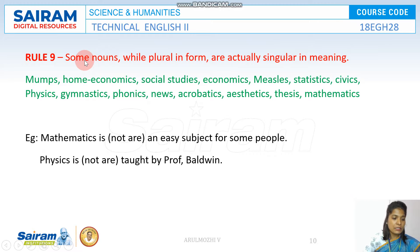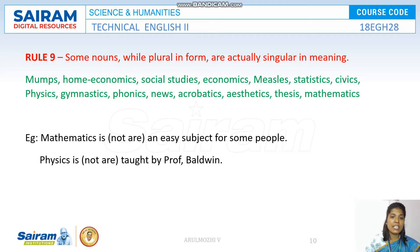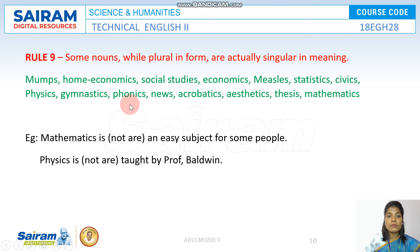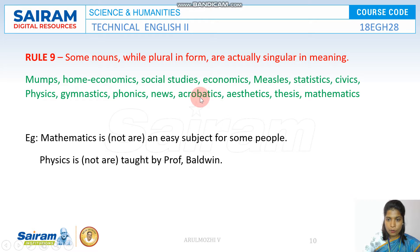Some nouns always seem to be plural in number, but they are not plural in nature — they are singular nouns. Take for example: mumps, economics, social studies, home economics, measles, statistics, civics, physics, gymnastics, phonics, news, aerobics, aesthetics, thesis, mathematics.